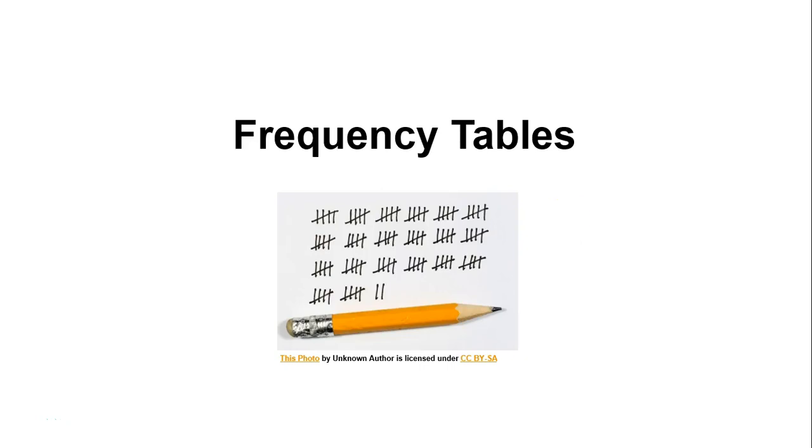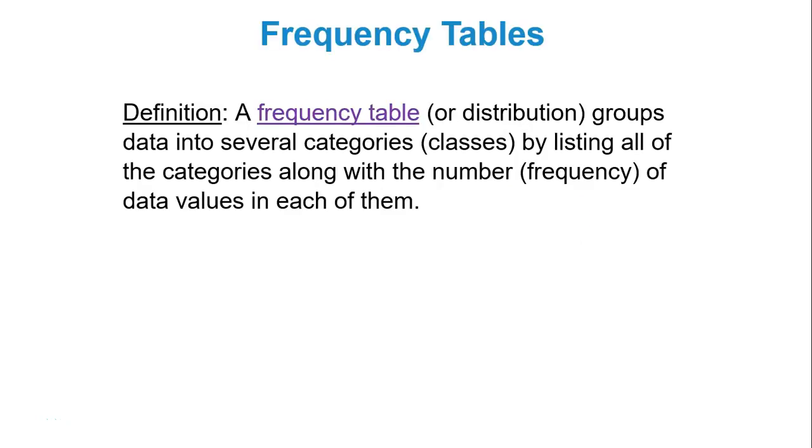Hello, we will now discuss frequency tables. A frequency table or distribution groups data into several categories referred to as classes. Sometimes they use the word bins instead of classes by listing all the categories along with the number or frequency of data values in each of them. For instance, if you're a teacher with exam scores ranging from 30 to 100 percent, you can't just list every single exam score. You group the data into groups or classes or bins, which is the proper terminology to use.